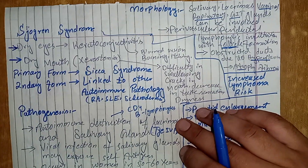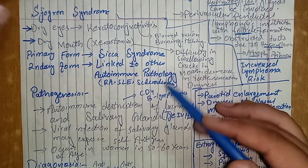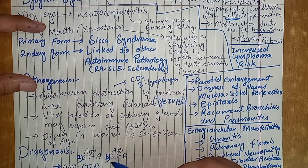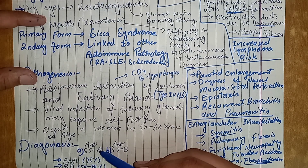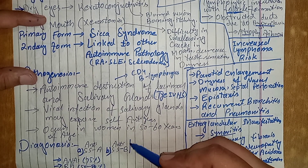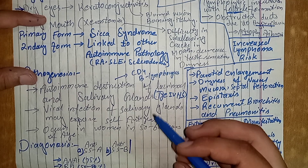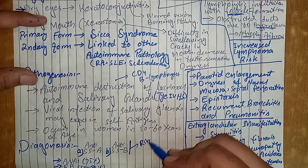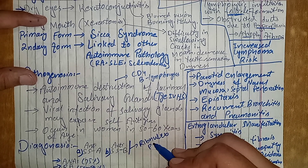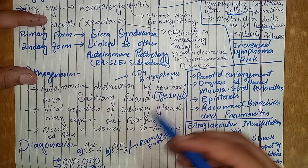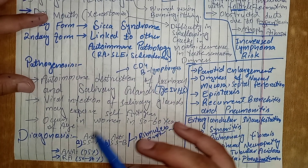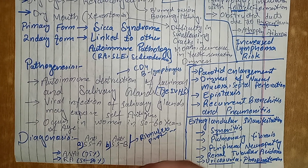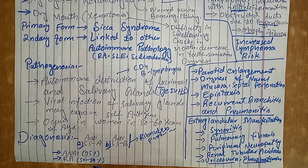Diagnosis involves the different symptoms of the disease as well as lab tests, including detection of specific antibodies in the circulation. Anti-SSA and anti-SSB antibodies — directed against small ribonucleoprotein particles — are involved in disease pathogenesis. Anti-nuclear antibodies are present in up to 75% of cases, and anti-RA antibodies can also be present in 50% to 80% of cases.